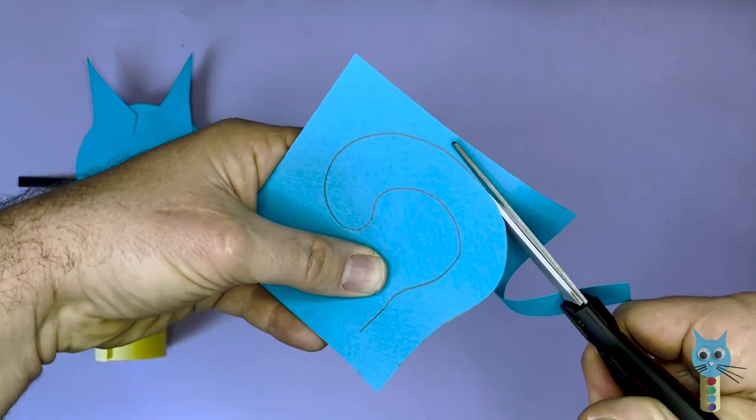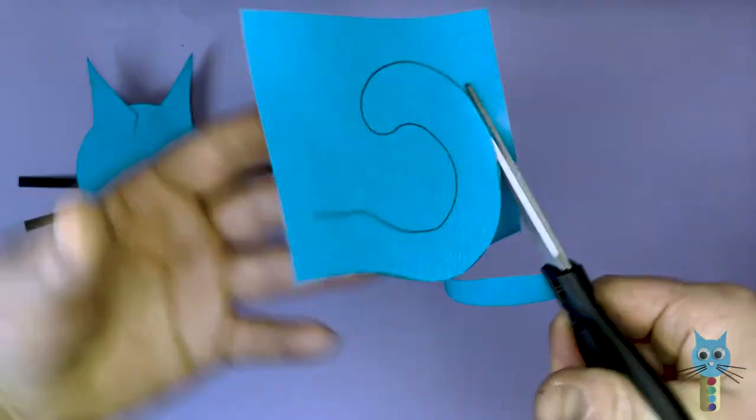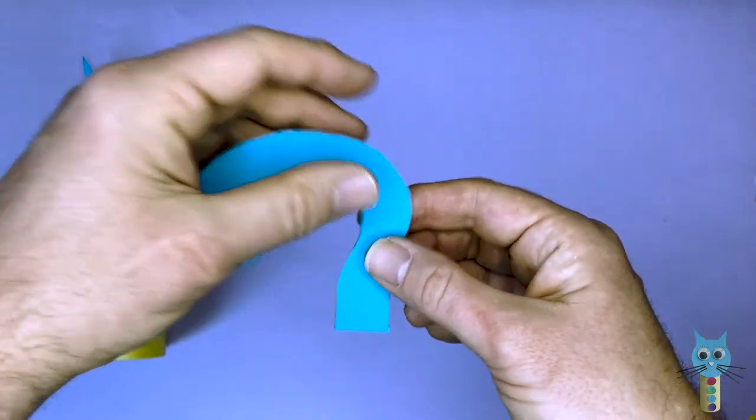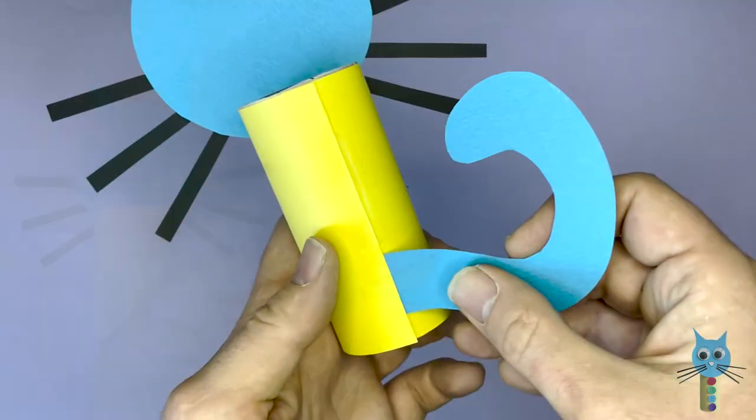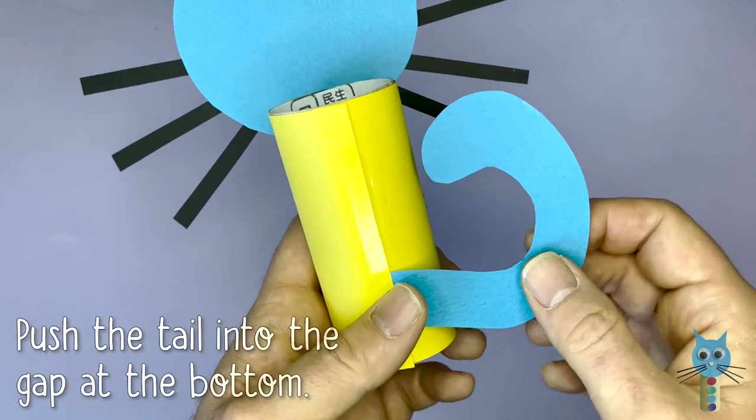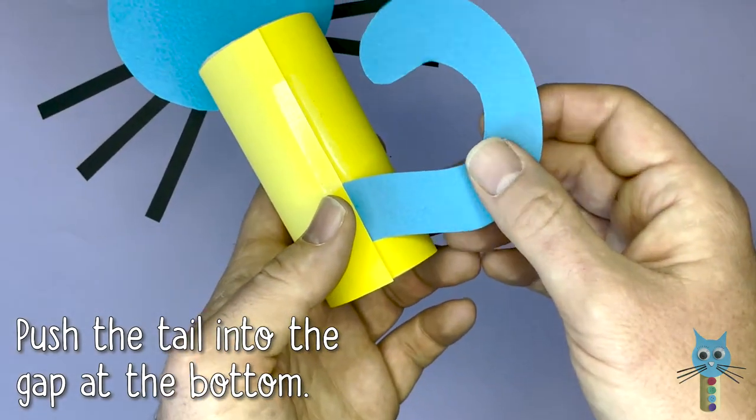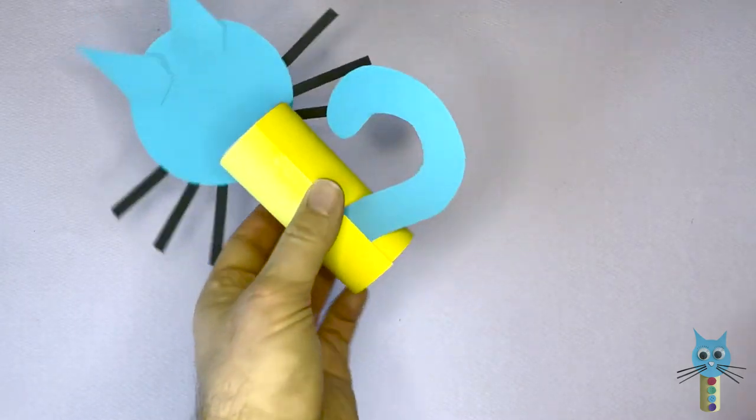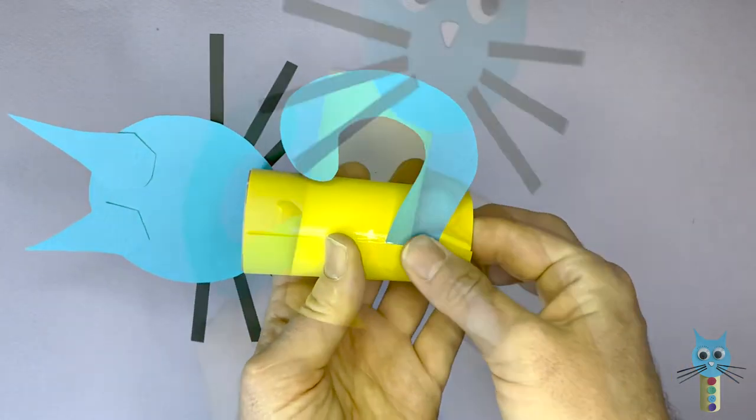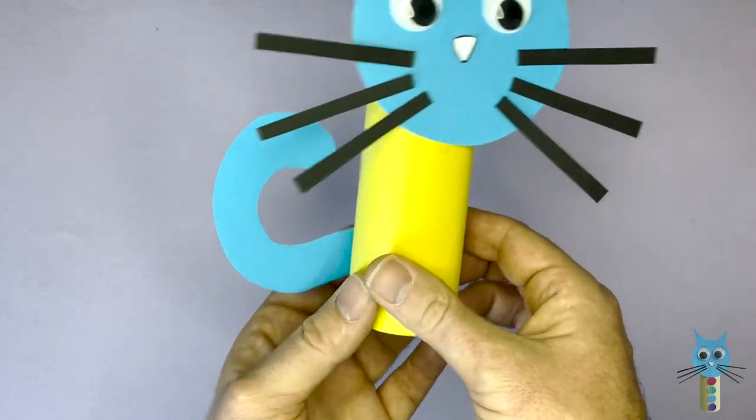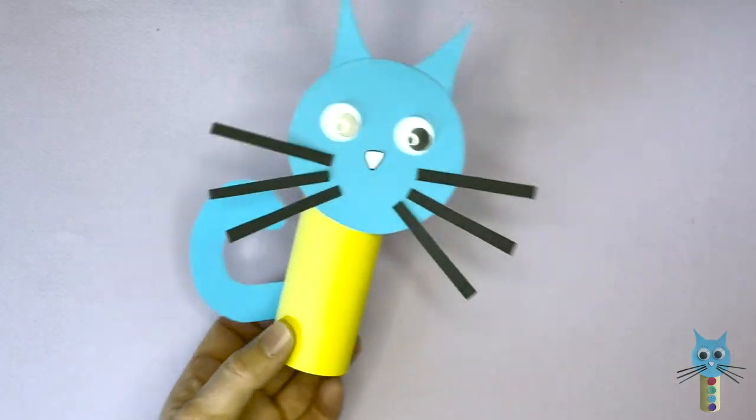And then just cut around the pencil line. Cut all the way around until you have all of the tail ready to stick onto the body. Now remember that tape - we put that tape at the top so there should be a gap in the bottom of the yellow card. Push that into that gap and then simply use a small piece of tape to keep it held into place. So now we have a very 3D looking cat.